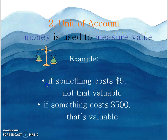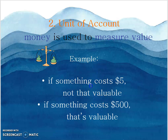The second function is unit of account. Money is used to measure value. If something costs $5, it is not very valuable; if something costs $500, that is valuable. Money measures the worth of goods and services. For example, a car priced at $100,000 is considered more valuable than one priced at $30,000.